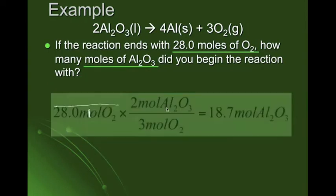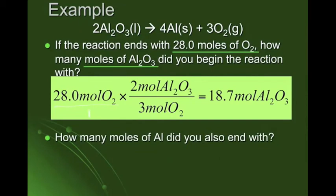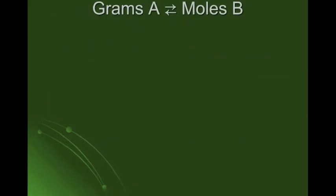Next example: how many moles of aluminum did you also end with, given 28 moles of oxygen? We set it up with 28 moles of oxygen and the mole ratio of 4 moles of aluminum to 3 moles of O₂. These units cancel. Multiply the top, divide by the bottom, and we get 37.3 moles of aluminum. That's a mole-to-mole ratio.